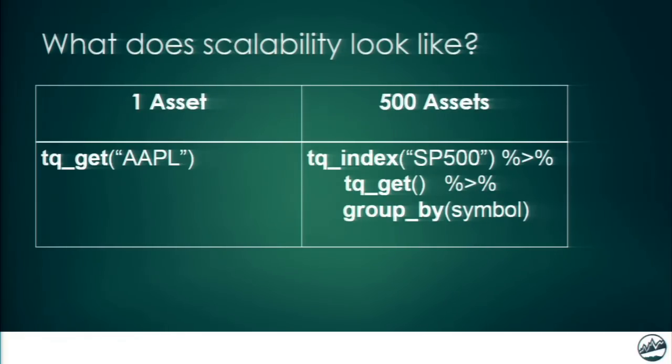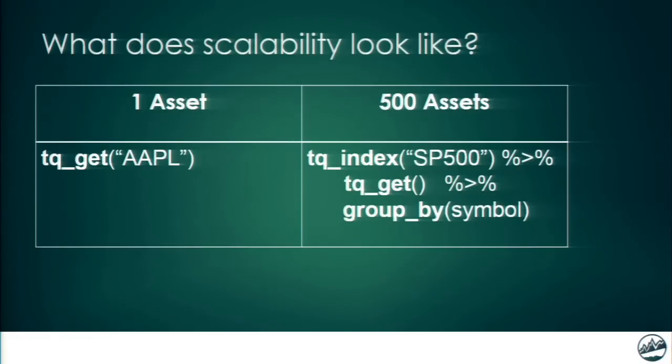Going to 500 assets is where you get your advantage. We have a handy helper function called TQ-Index. We pass the S&P 500, which gets us the S&P 500 stocks as a data frame. You pipe that into TQ-Get, you get all the daily historical prices, and then if you tack on a group-by and group by the symbol, you're ready to do the long analysis — subsetting and applying functions.